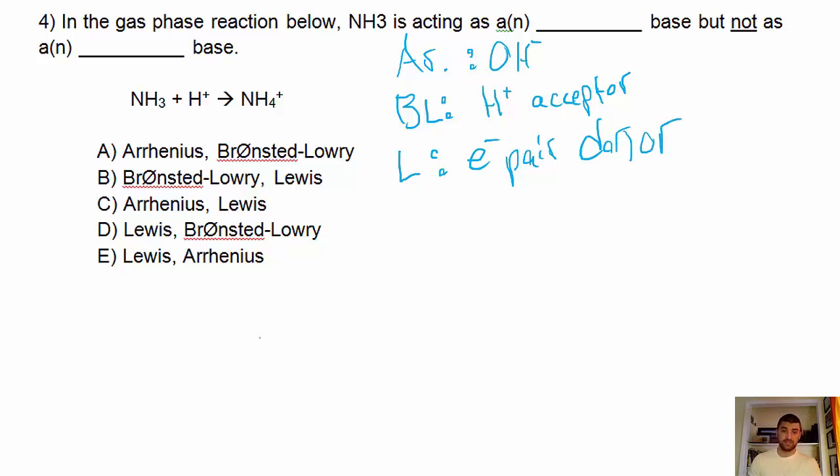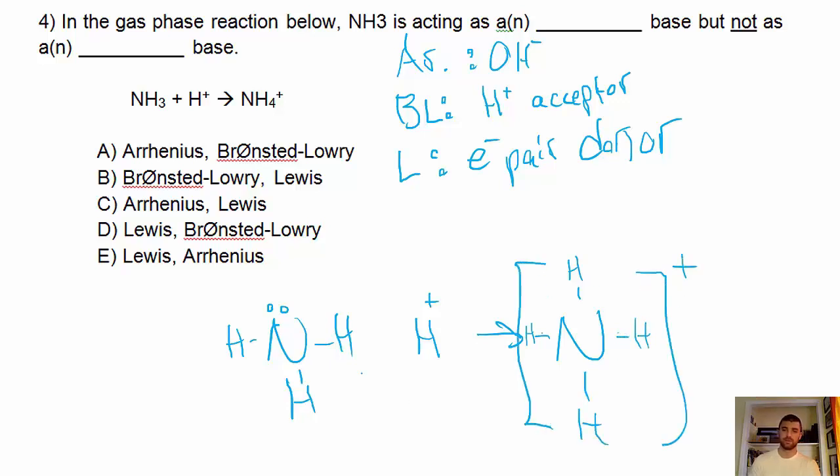So let's draw out what's happening. We got NH3. It's got a lone pair of electrons up here and we got H+ proton flying around and it reacts to give us NH4+. That whole thing has a positive charge. So what happened here? Well, NH3 was a proton acceptor. It accepted a proton, but it also donated electrons.